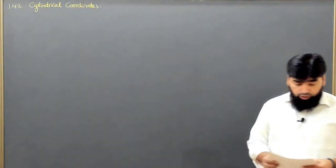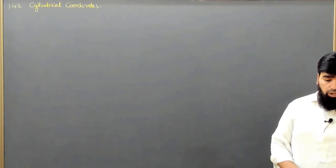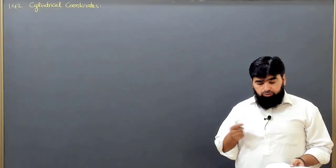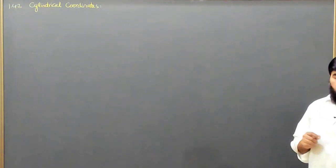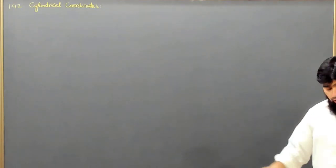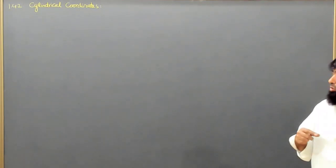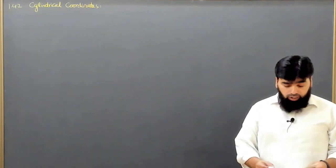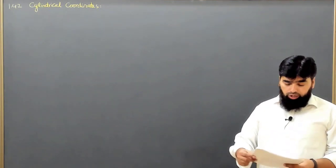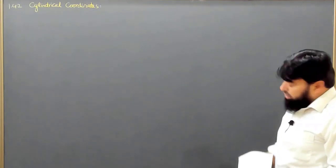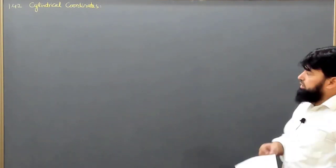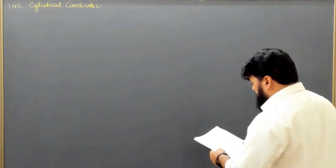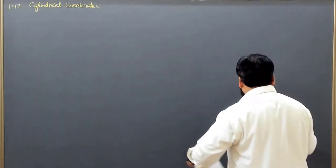In section 1.4.2, we will discuss cylindrical polar coordinates. We already discussed the spherical polar coordinates for spherical geometry. Now in physics, we also encounter cylindrical geometries, so we want to design a specific coordinate system to make calculations easier. The cylindrical coordinate system is simpler compared to the spherical polar coordinates. Let me design the figure to illustrate this.